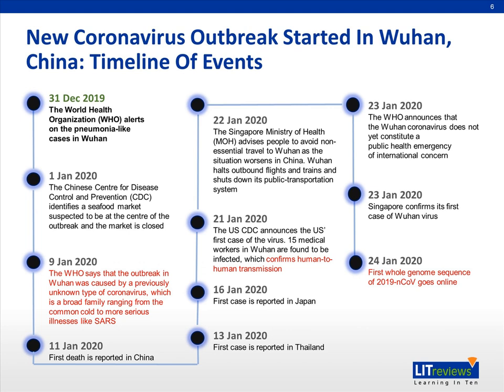Here are the key events. December 31st, 2019, WHO alerted the world to this pneumonia-like outbreak in Wuhan. January 1st, China CDC reported that in the early cluster of patients, 80% were associated with a seafood market that also traded animal products and live animals like rats and raccoons. January 9th, WHO announced the outbreak is most likely caused by a previously unknown coronavirus. January 11th, the first death was reported in China. Import cases began appearing in Thailand on January 13th and Japan on January 16th, and by January 21st the U.S. had its first imported case. On January 21st, the China Ministry of Health also confirmed that the virus is capable of human-to-human transmission, based on a cluster of infections in a hospital.